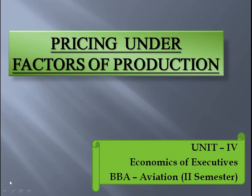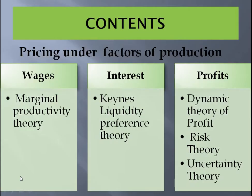Good morning, welcome back. Today we are going to learn pricing under factors of production, which is module number four for Economics of Executives, BB Aviation, second semester. In this chapter, the contents have been divided into three parts: the first is wages, where you'll learn marginal productivity theory; the second is interest, where you'll learn Keynes's liquidity preference theory; and the third is profits, covering three major theories: dynamic theory of profit, risk theory, and uncertainty.